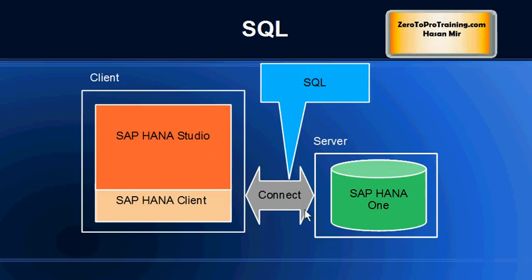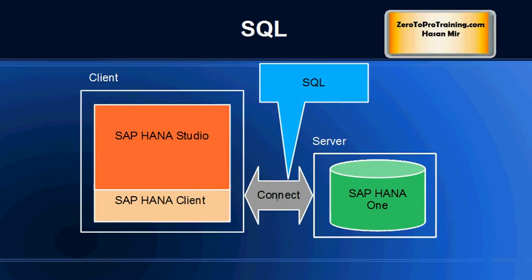Understand that SAP HANA Studio, when it talks to SAP HANA One database, the only language it uses to communicate with the database is Structured Query Language. You may interact with SAP HANA Studio using different methods — you may enter SQL directly, or you may use other features on the screen to perform interactions, and you may not be entering SQL all the time. But whenever SAP HANA Studio talks to the database, it always talks in one language that the database understands, and that is Structured Query Language. So all your interactions are translated into SQL if it is related to anything to do with the database.